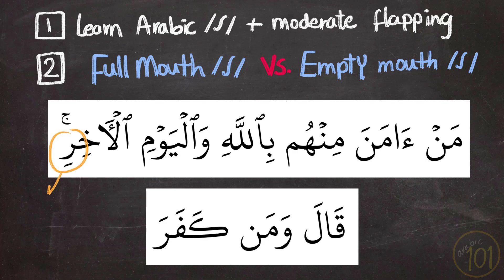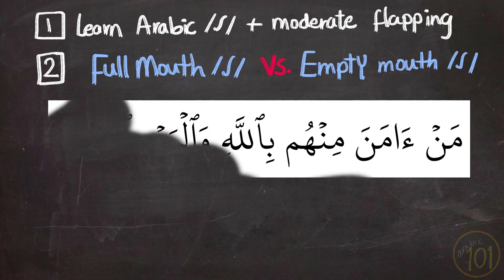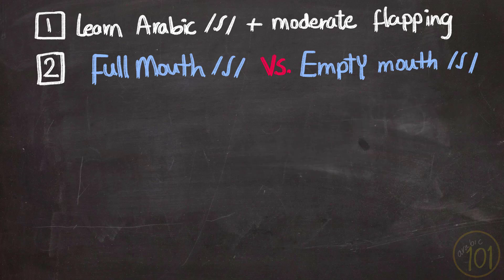As you can hear, the first Ra is empty mouth, so we should say 'Ra' — we said Al-Akhir, and not Al-Akhir; that is not correct. And in the second example, we see that it is a full mouth Ra, so we said Man-Ka-Far, and not Man-Ka-Far — that is not the way to pronounce it. And that was the second thing you needed to know before we get into the rules: to be able to hear and produce the difference between full mouth Ra and empty mouth Ra.